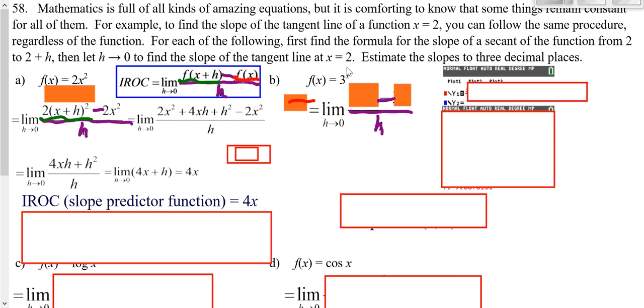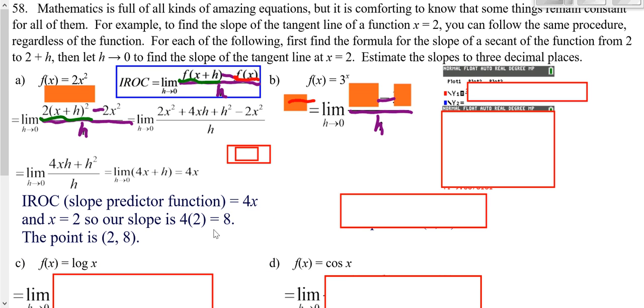We are looking for our slope at x being 2. All we'd have to do is take 2 and plug it in for x. When we do that, we would get 8. If you're looking for the equation of your tangent line, your slope would be 8 and your point would be 2, 8.